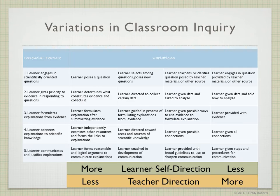Inquiry can be implemented in a lot of different ways in the classroom, and this chart shows different variations on how that might happen. Down the left-hand side are the five essential features of inquiry we just talked about, and the four columns on the right show different variations of inquiry. On the left side of those columns are ways that are more self-directed for the learner, and on the right side are ways that are more teacher-directed and less student-directed. I'll leave this up for just a minute and let you take a look at the different ways inquiry could be implemented.